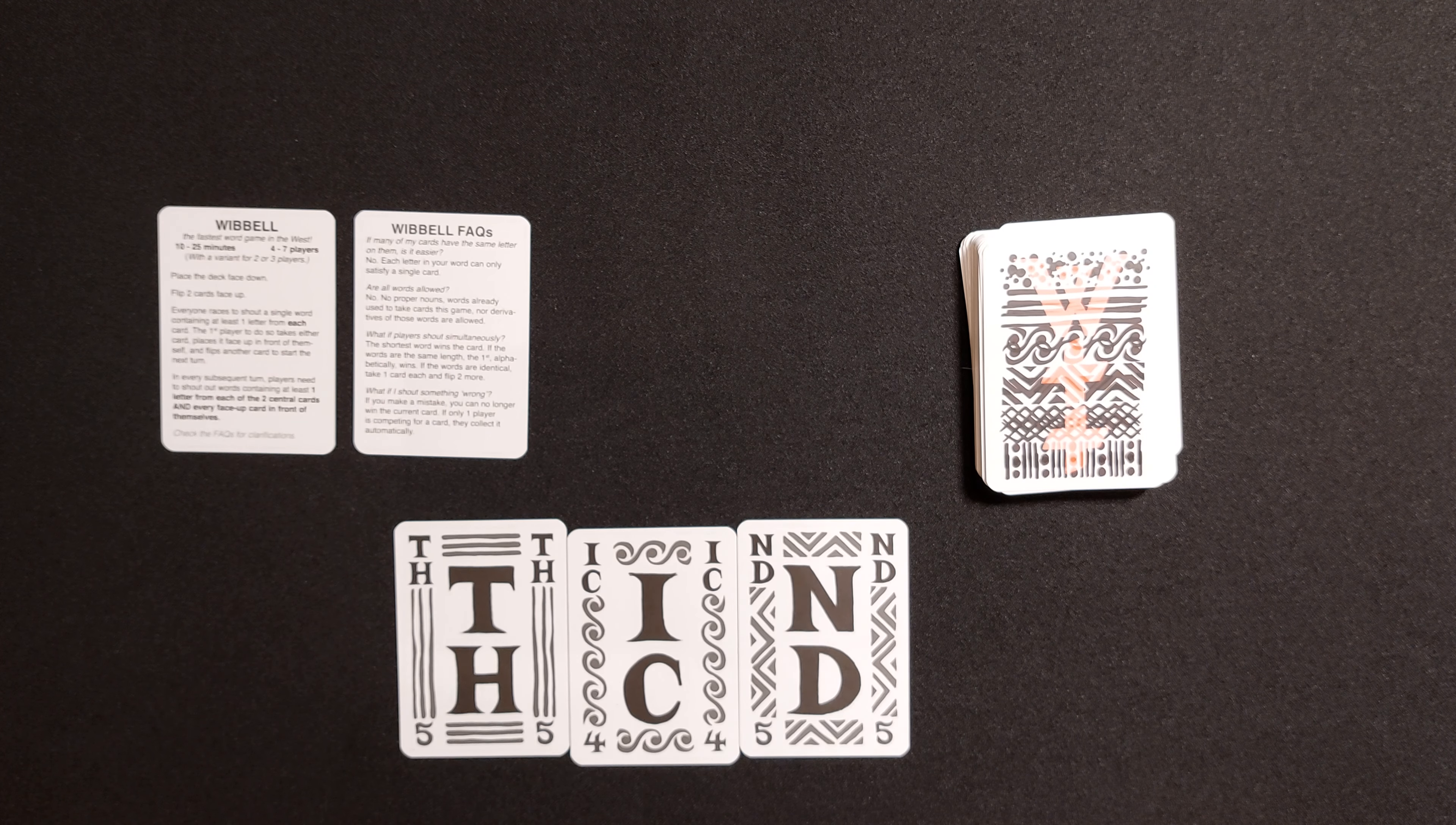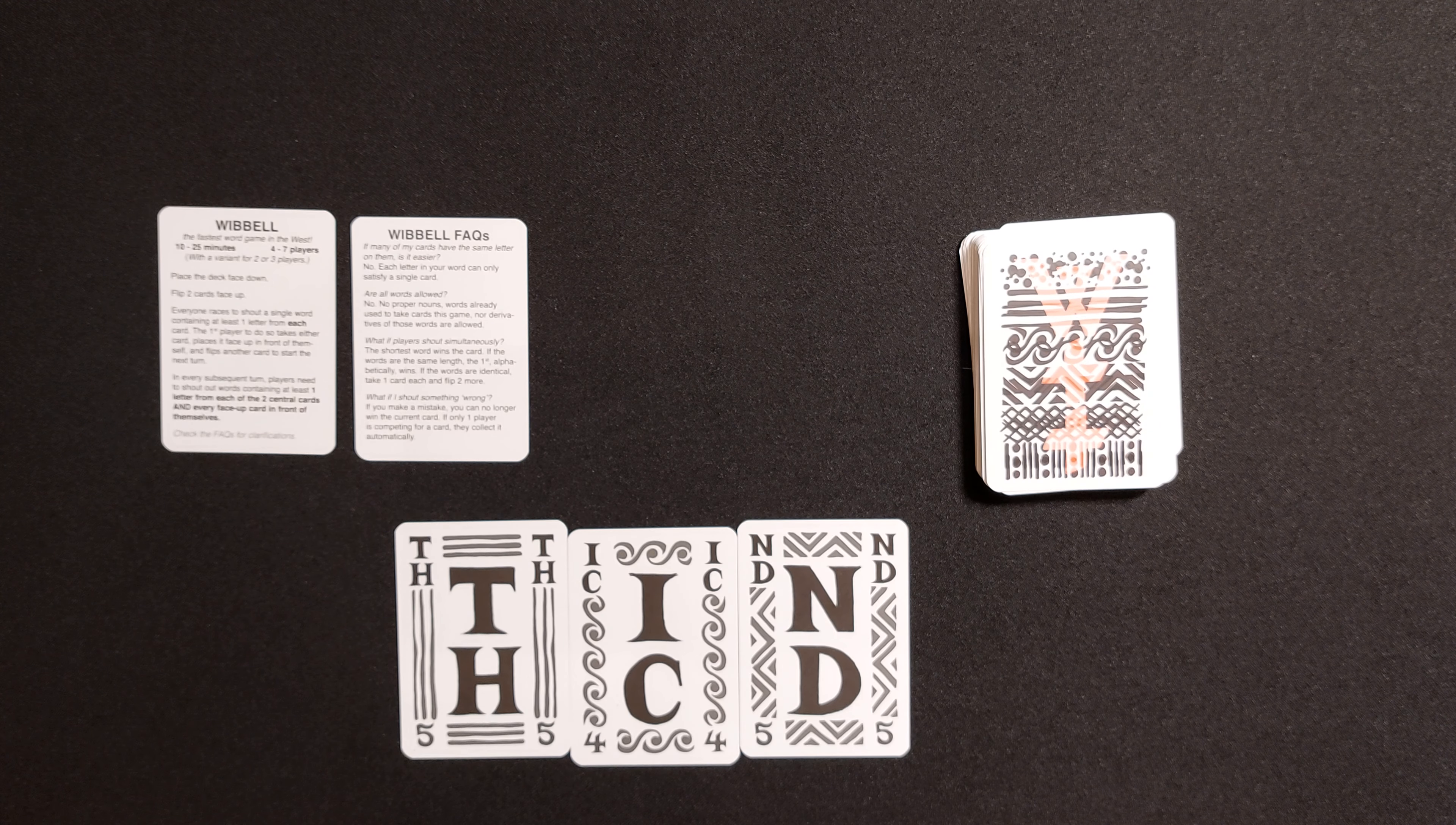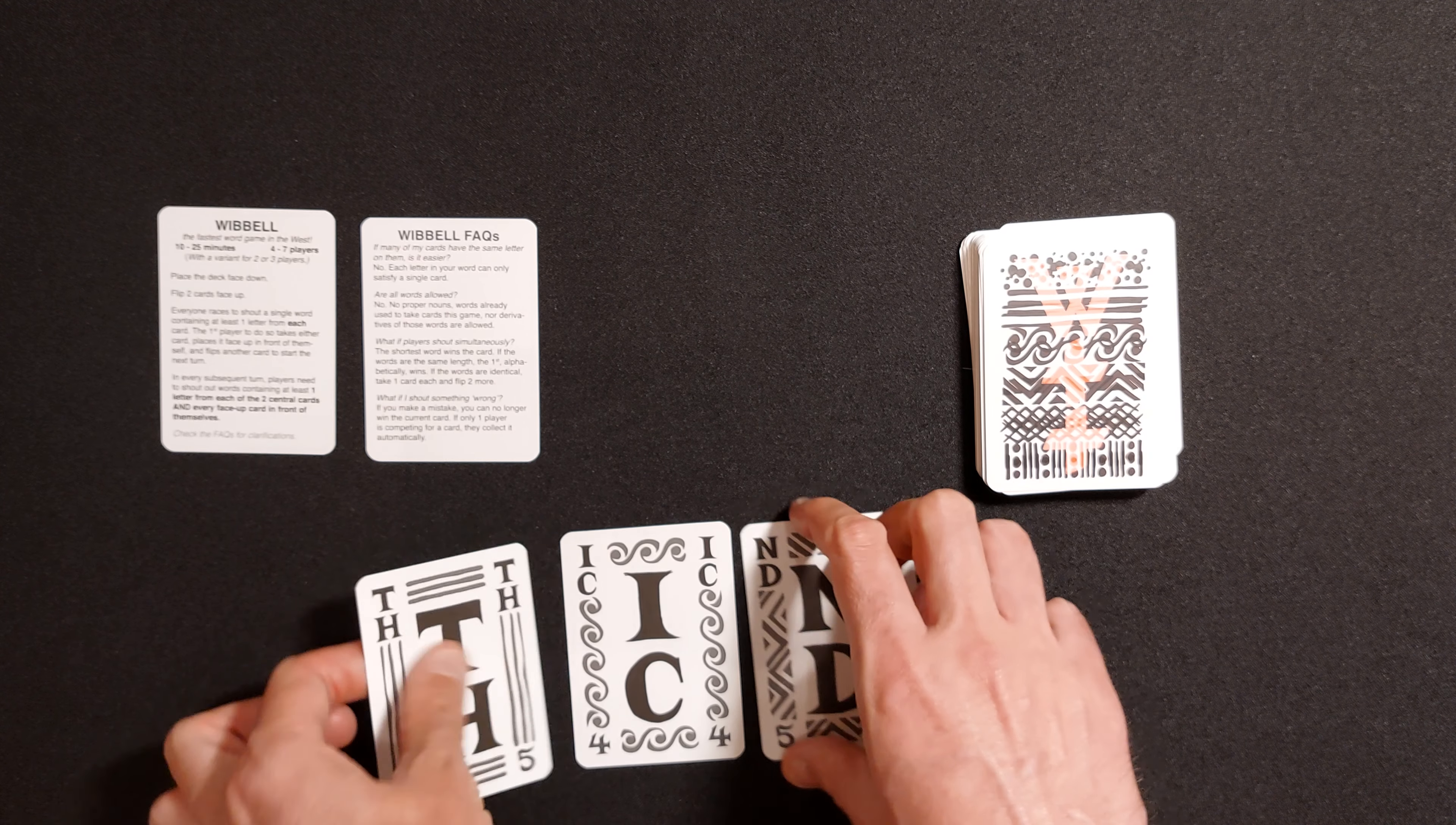And the other side is just to, we didn't even need to use this FAQ. I don't even know what's on here. If many of the cards are the same letter on them, it's easier. No, each letter of any word can only be satisfied in a single card, just to make sure that's clear. Are all words aware? No. So, here we go. No proper nouns. Words already used to take cards this game. Not derivatives or the same words as else. There we go. You can't do that again. What if players shout simultaneously? The shortest word wins the card. Okay. If the words are the same length, the first alphabetic one wins. If that's the same, take one card and flip two more. So, great. What if I shout something wrong? If you make a mistake, you can no longer win the current card. If only one player is competing for a card, they collect automatically. So, there we go. That sorts it out.